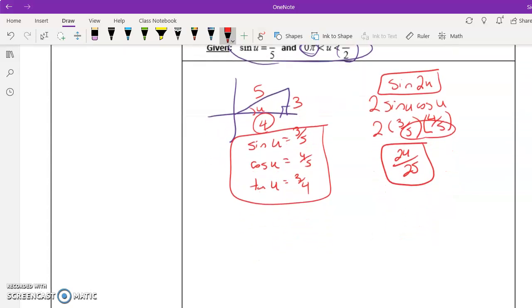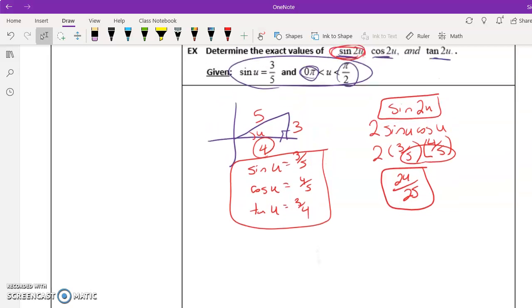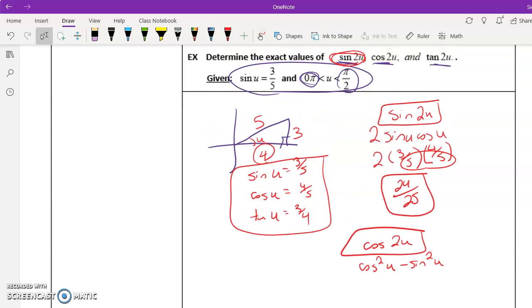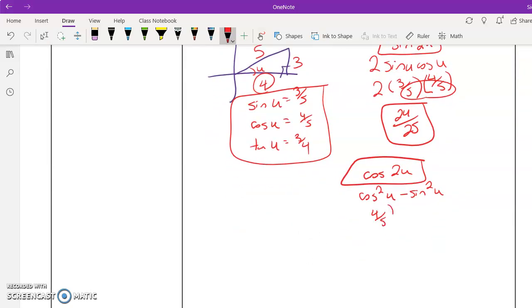So on the cosine, it really doesn't matter which one you use. That's totally up to you. So we're going to do cosine of 2u. I'll just use this one. So cosine squared, let's see, it's right here, 4 fifths squared, and then 3 fifths squared. So we have 16 over 25 minus 9 over 25 equals 7 over 25. And just to let you know, it doesn't matter which one of the three cosine identities that you choose. They're all going to end up with the same answer if you did it correctly. So it really doesn't matter.